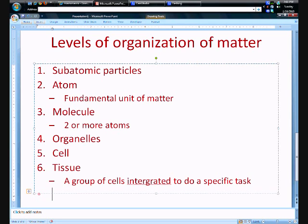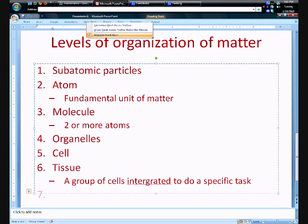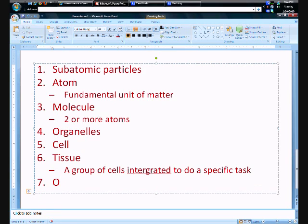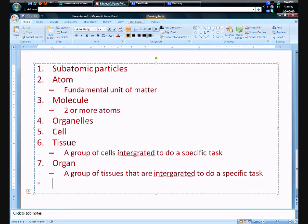Now it's going to get a bit monotonous from here on out. Number seven - what does a bunch of tissues make? A bunch of tissues make an organ. So a group of tissues that are integrated to do a specific task.